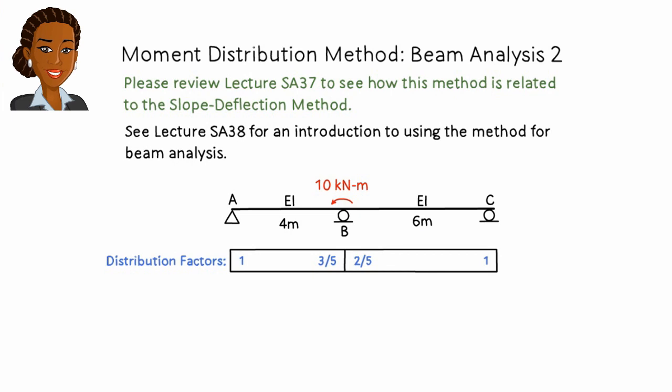If you recall, we said that since there is only one member connected to the pin support, the distribution factor at A is 1. That is, any bending moment present at A is going to be distributed to the left end of AB in its entirety.